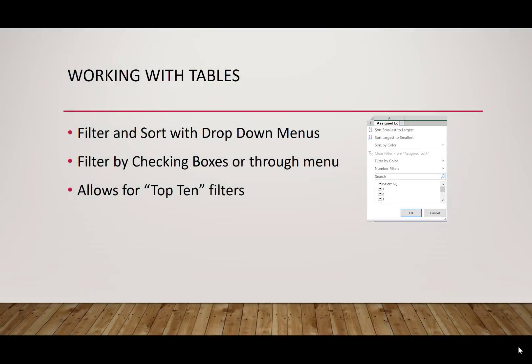One of the features of tables are the filters that have been added across the top. Next to each one of those headers, there's a little dropdown menu that allows you to sort smallest to largest, sort by color if you've been using color coding. You can also select to only see certain items — like only those from Bidder 3. You have a full checkbox menu, and if you go into the filters, you can set top 10 filters to only see the top 10 customers or the highest 10 auction items.